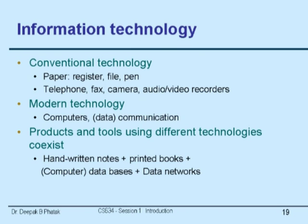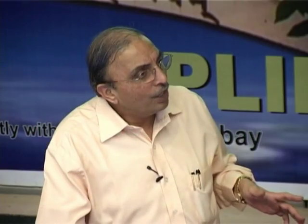Never think that information technology means only computers or communication. Conventional technology includes paper, register, file, pen, telephone, fax, camera, audio, and video recorders. Modern technology means computers and data communication. Products using different technologies coexist — handwritten notes, printed books, computer databases, and networks. Paper technology is ubiquitous because it is inexpensive, easily available, and has longevity. The challenge with modern digital technology is longevity: data stored on magnetic tapes 50 years ago or 8-inch floppies 30 years ago cannot be read today. As technology changes, it is the responsibility of the information system to transfer old information stored in old media to new media.